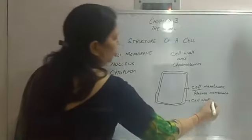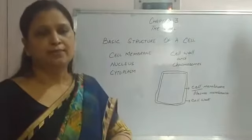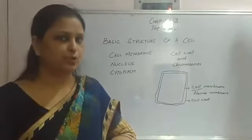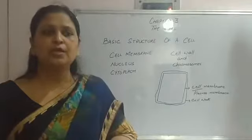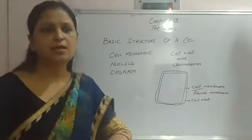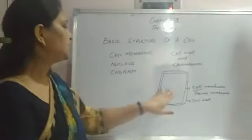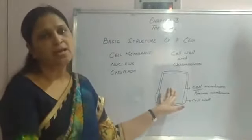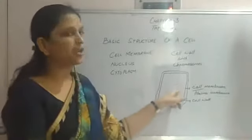Cell wall is non-living and made up of cellulose. Within the cell, nucleus is present. In an animal cell, nucleus is located in the center. But in a plant cell, nucleus is located at the outer edge.